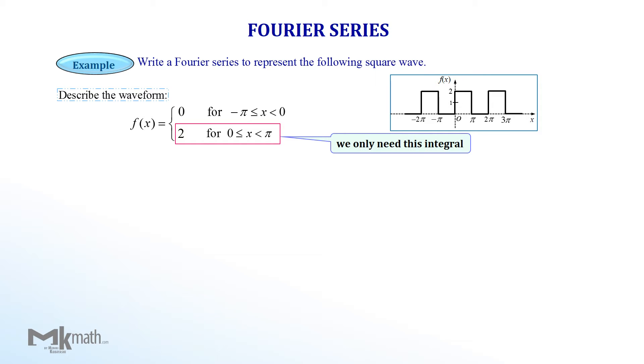First, we find the constant term a0 using the formula. Placing 2 for the f of x position, 0 as the lower limit and pi as the upper limit to get 1 over pi integral of 2 dx. Taking the antiderivative of 2 to get 1 over pi times 2x. Do not forget to place the lower and upper limits as we need to evaluate the function using them.